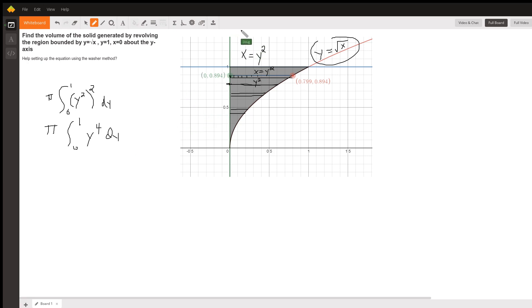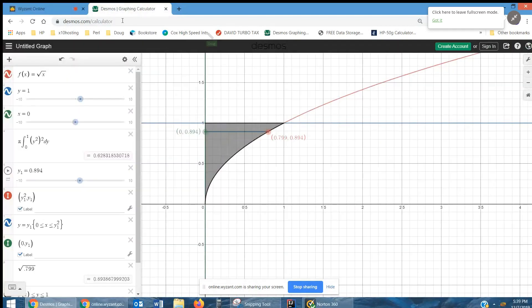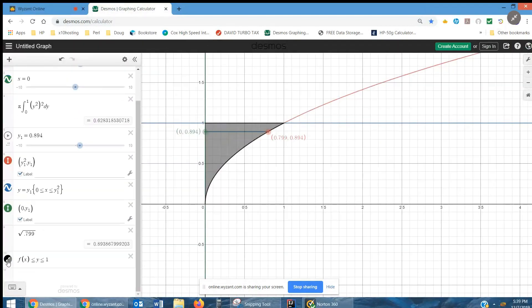I'm going to share my screen, go to Desmos real quick. I'll hide the region that we're rotating, so that you can see, as we move from 0 to 1 along the y-axis, the corresponding x value for each y is y-squared.